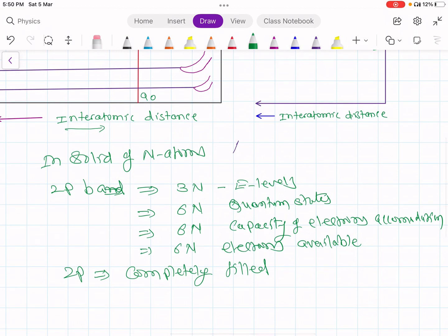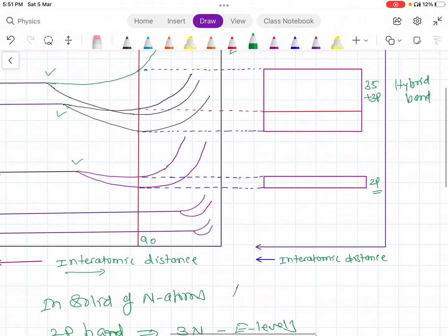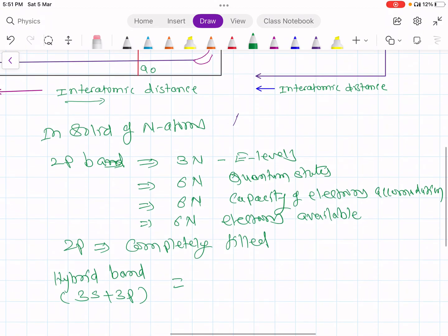Then consider hybrid band. Hybrid band, which is combination in this case is 3s plus 3p is the hybrid band. This band over here. In this band, since it is a combination of 3s and 3p, 3s is having N energy levels. 3p is having 3n energy levels. So total energy levels are 4n. That is 1n plus 3n.